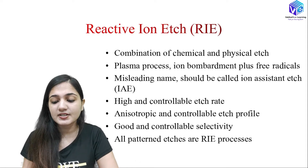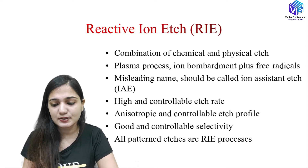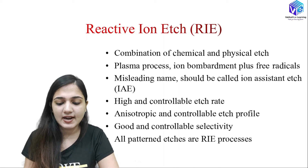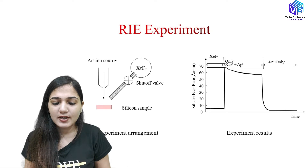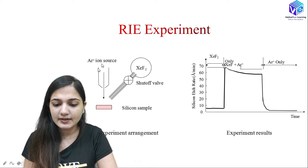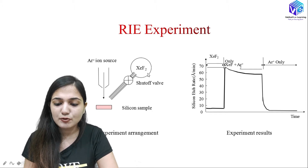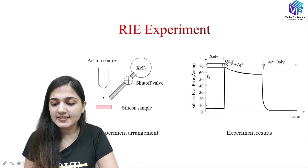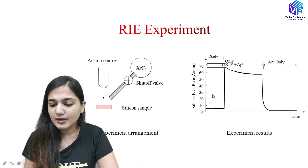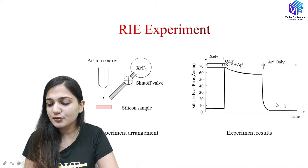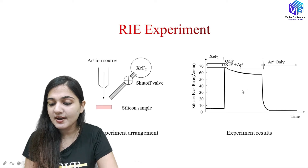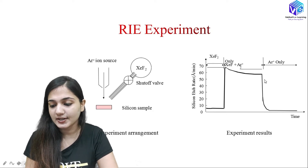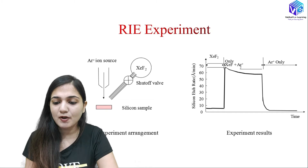All patterned etches are RIE processes if the feature sizes are very small. If I have a small feature size, the only option is RIE. For example, if we use only argon ions hitting a silicon sample, that is just a physical process. If we use only XeF₂, that is a chemical reaction and the silicon etch rate is relatively low. Similarly, using argon ions alone gives a lower etch rate. But if we use XeF₂ plus argon ions together, you can see how high the etch rate becomes — this is how RIE increases etch rate.